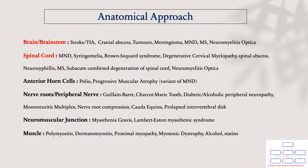Using the anatomical approach, you can appreciate the list of differentials that could cause weakness, classed according to where the pathology lies anatomically. The lesions could arise in the brain, brainstem, spinal cord, anterior horn cells, your nerve roots or peripheral nerves, your neuromuscular junction, or your muscles.